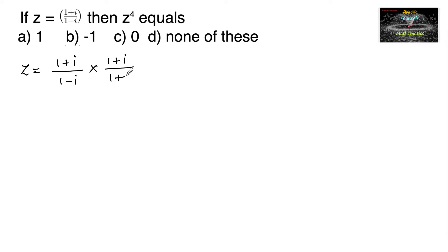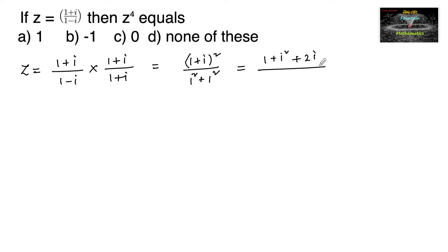Multiplying by 1 plus i over 1 plus i, we get 1 plus i whole square upon 1 minus i into 1 plus i, which equals 1 squared minus i squared. Expanding: 1 plus i square plus 2i upon 1 plus 1, that is 2. Since i square equals minus 1, we get 1 minus 1 plus 2i upon 2, and the 1 and minus 1 cancel, leaving 2i upon 2, which equals i.